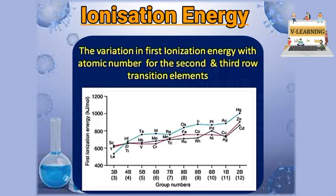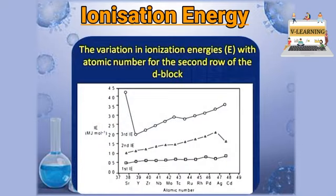If we compare the third ionization enthalpy, the first, second, and third ionization enthalpy values follow this trend: the first ionization enthalpy is always less than the second, and the second is always less than the third. This is because as we remove each successive electron, it becomes more difficult and more energy is required.